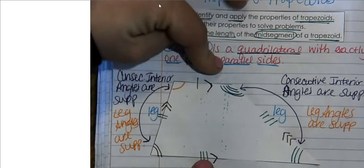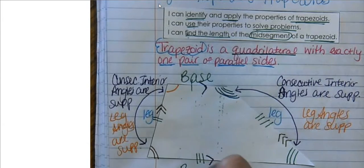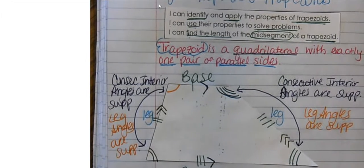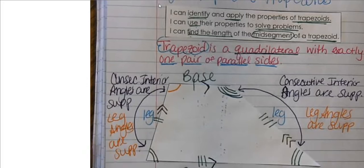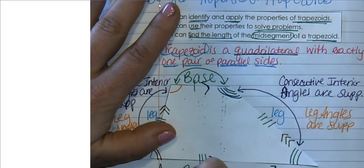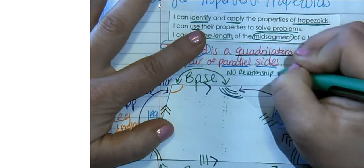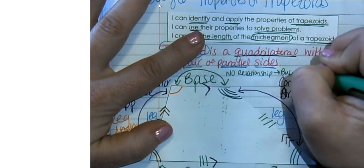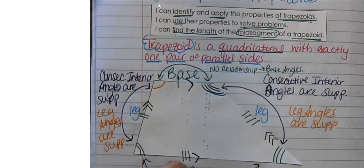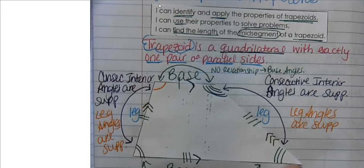The other two sides have names — they are called bases. This is a base and this is a base. These bases are typically never the same size; one base is going to be longer than the other. The angles along the bases are known as base angles. In a regular trapezoid, the base angles have no relationship at all. They're just angles that are along the base — no relationship in a regular old trapezoid.